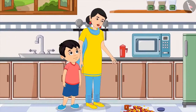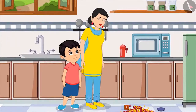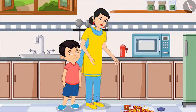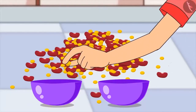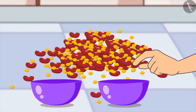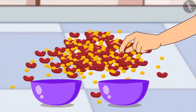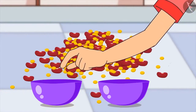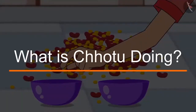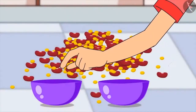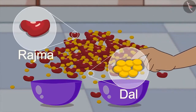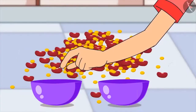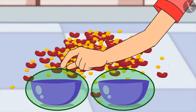Dal has mixed with rajma. Chotu, can you help me separate dal and rajma? Yes, mom, I will help you do this. Chotu then starts putting dal in one bowl and rajma in another bowl. He is classifying dal and rajma on the basis of their color and size, and grouping them into two separate bowls.